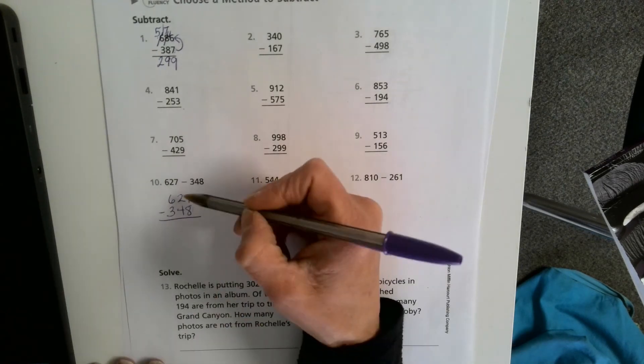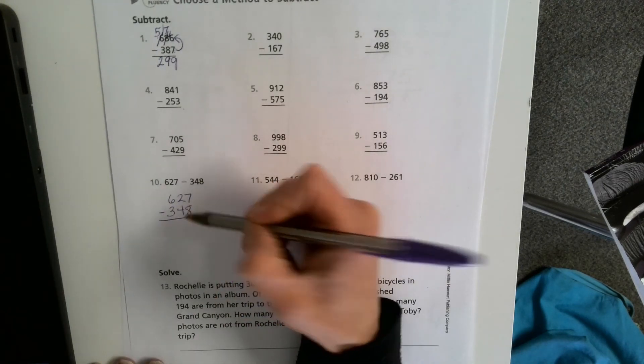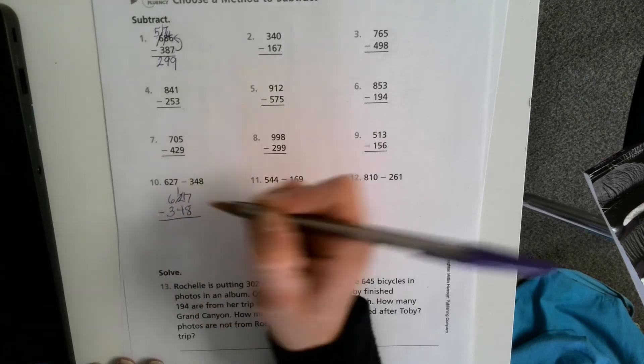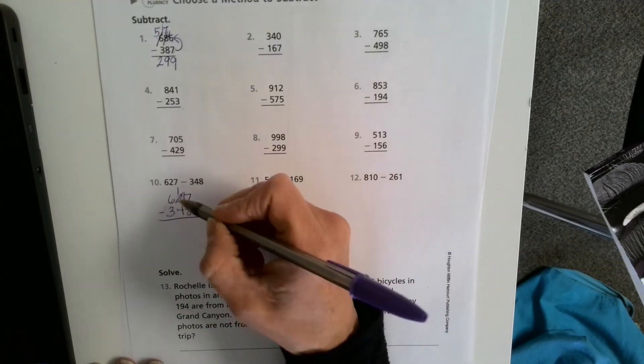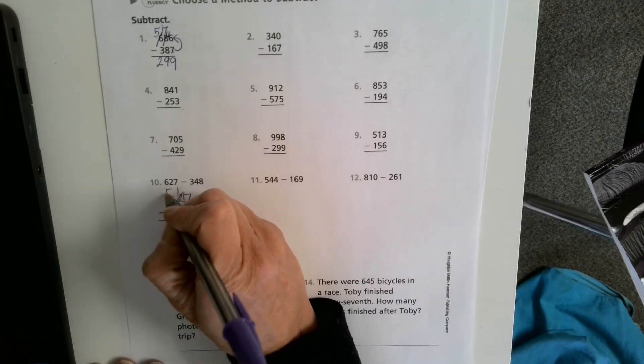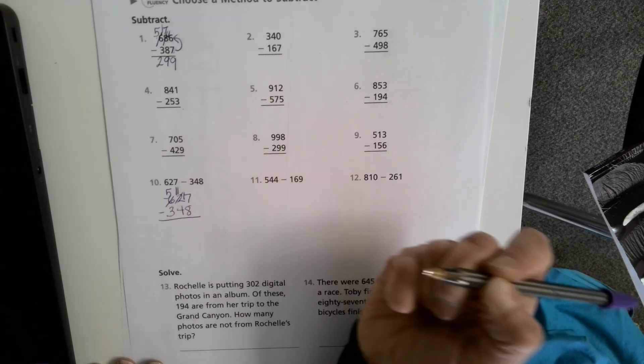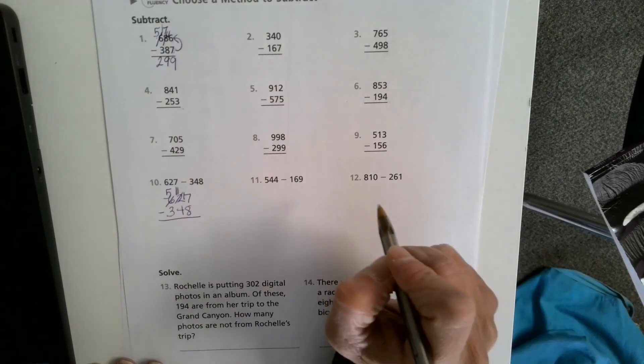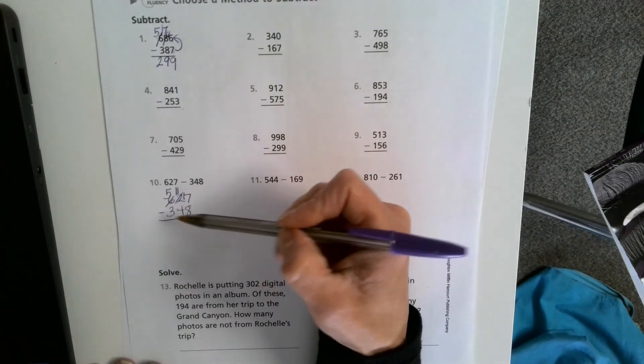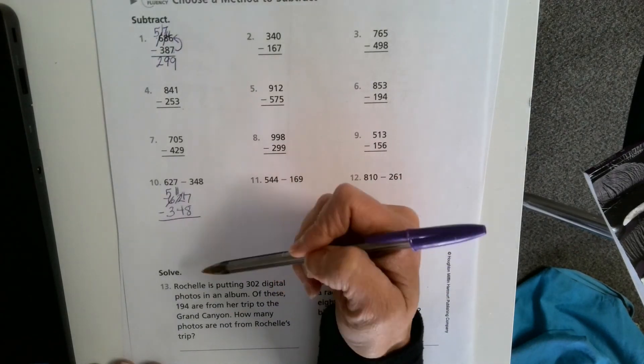This time I think I'll start in the ones. 7 minus 8, I can't do that. So I'm going to cross out the 2, make it a 1, and carry the 10. Now I have 1 minus 4, I can't do that. So I'm going to cross out the 6, make it a 5, and I'm going to carry the 1. So now all my numbers on top are greater than the ones below.